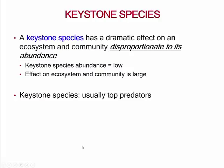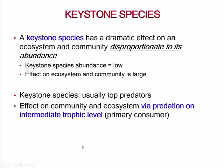The keystone species has an effect disproportionate to its abundance — they are predators in ecosystems. They have this effect mainly because of how they impact the intermediate trophic level, or rather the primary consumers, because these keystone species which are top predators prey upon and kill the primary consumers, and that then affects the rest of the community and ecosystem.